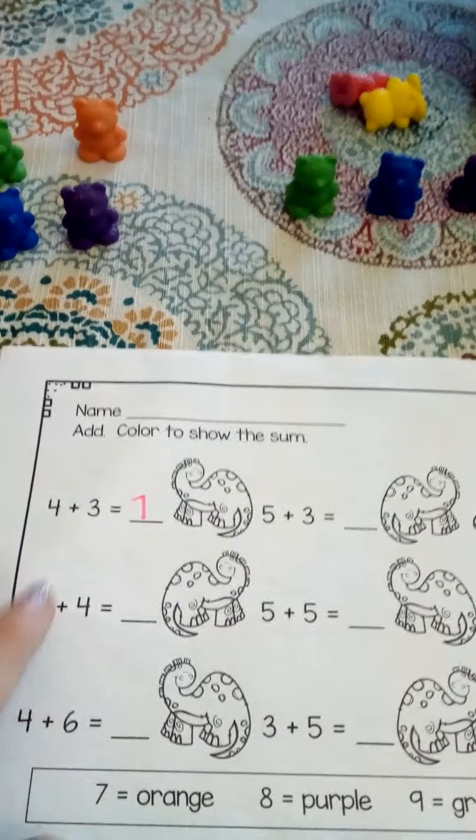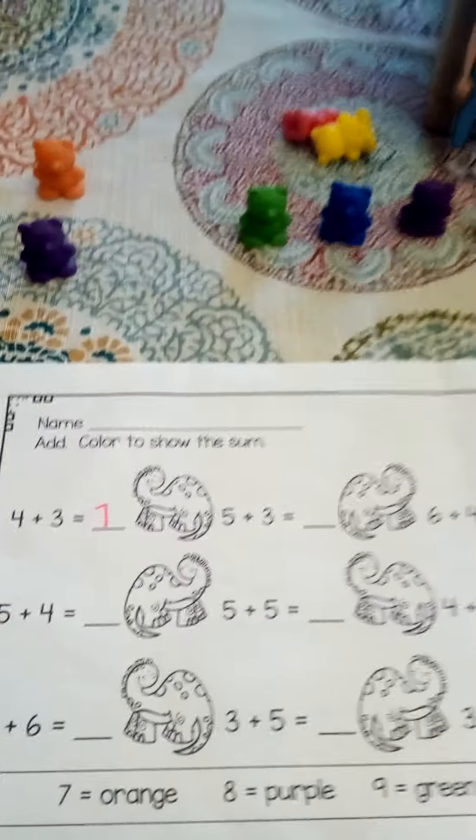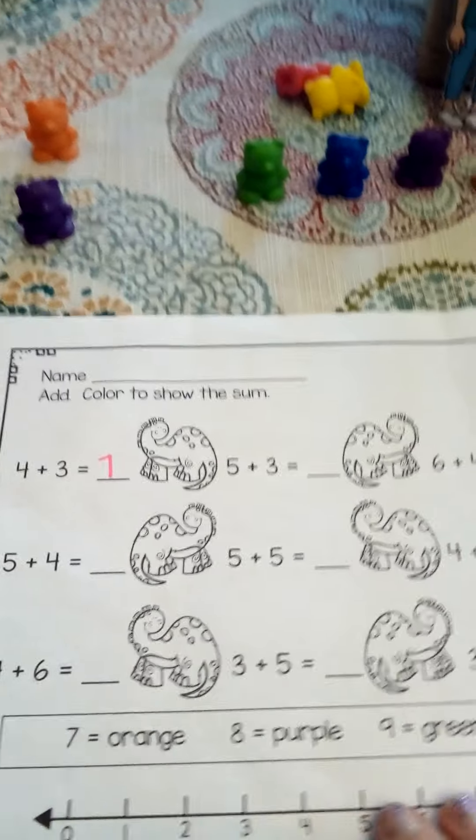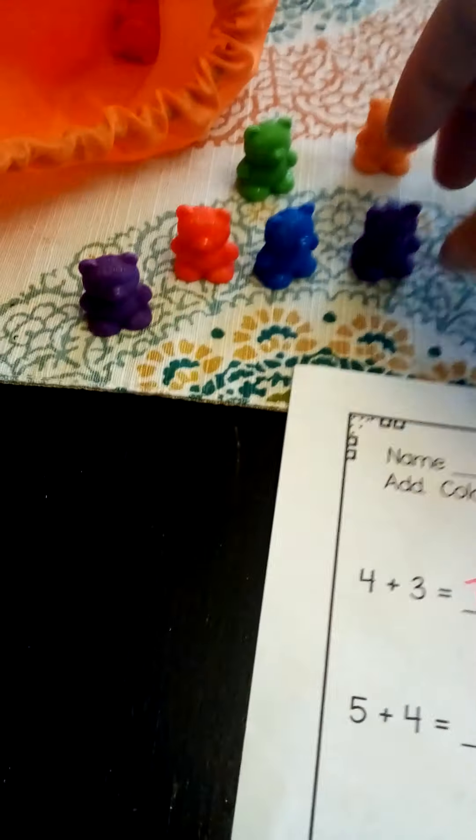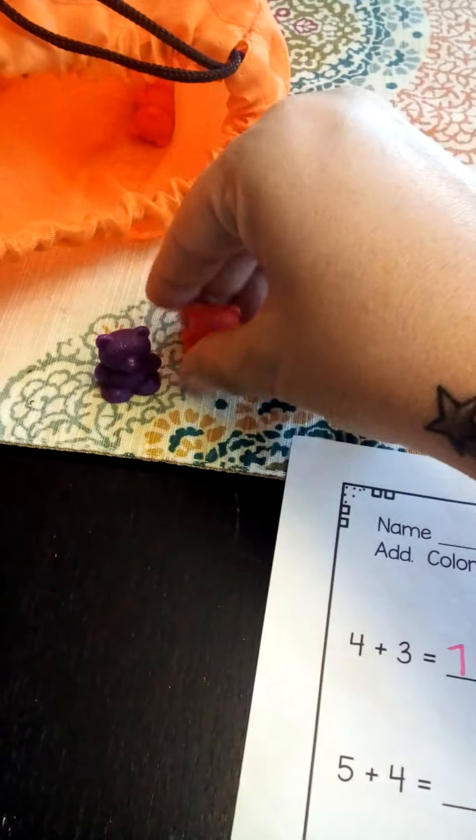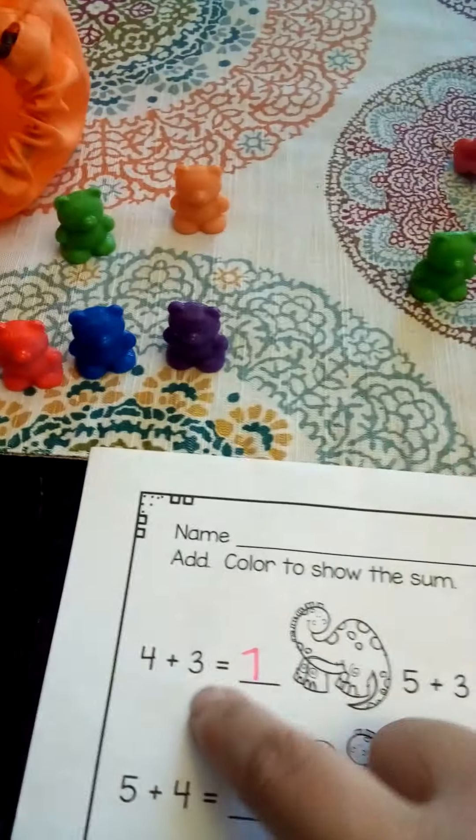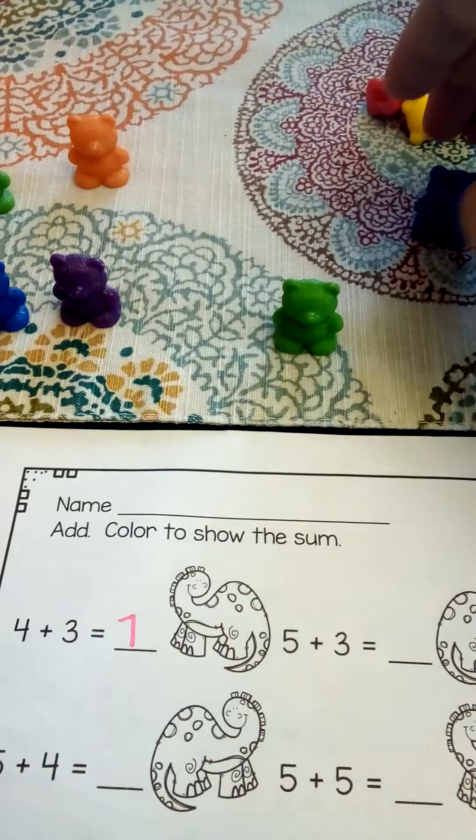So after you get your answers, you get to go back and find the right color to the right dinosaur. Okay. So I'm still going to do this first one with you guys, even though I have the answer there. So we have four and three. So let me get four bears. One, two, three, four, and three bears. One, two, three.